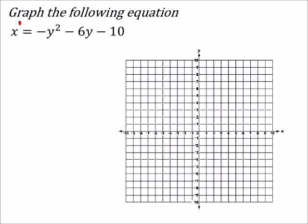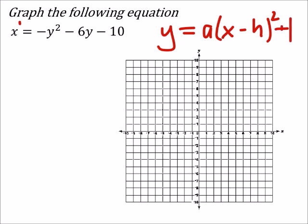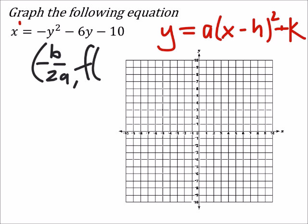The reason why this doesn't look like a parabola equation is because we're used to seeing it as y equals something. If we wanted to change this, you could make it a times (x minus h) squared plus k — that's the expanded form. The vertex formula we need to memorize is negative b over 2a, and then the y-value is found by plugging that x-value back into the equation.